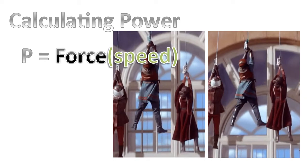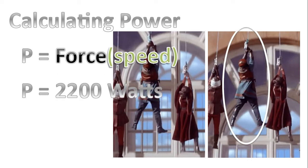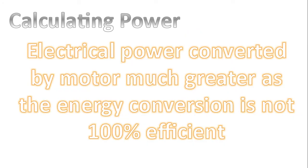And now substituting our numbers into the power formula, power is around 1300 watts for the actress who is being pulled upwards. Of course, circling the heavier actor there, that power would probably be closer to 2200 watts. And so the actual electrical power converted by the motor is most likely much greater than the power calculations we just did, as the energy conversion is not 100% efficient. And the calculations we just did assumed that the energy conversions were 100% efficient.